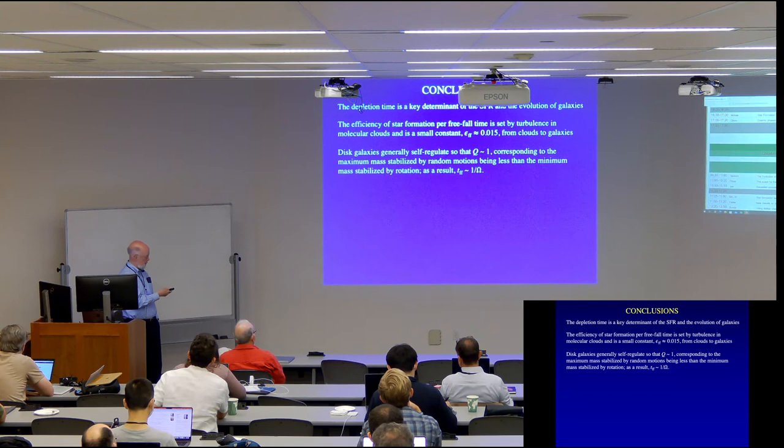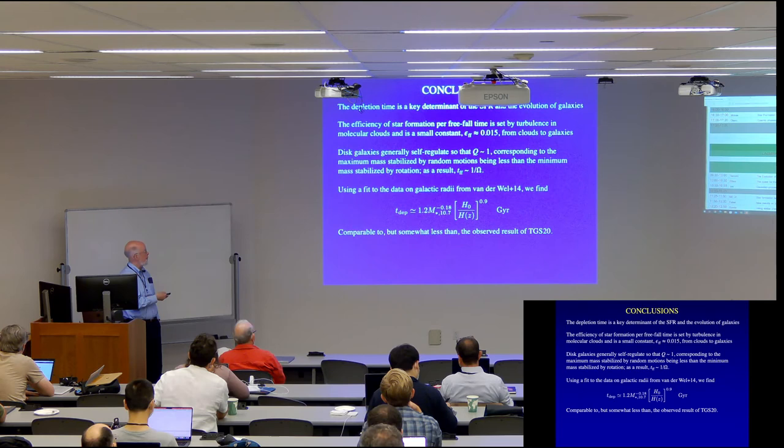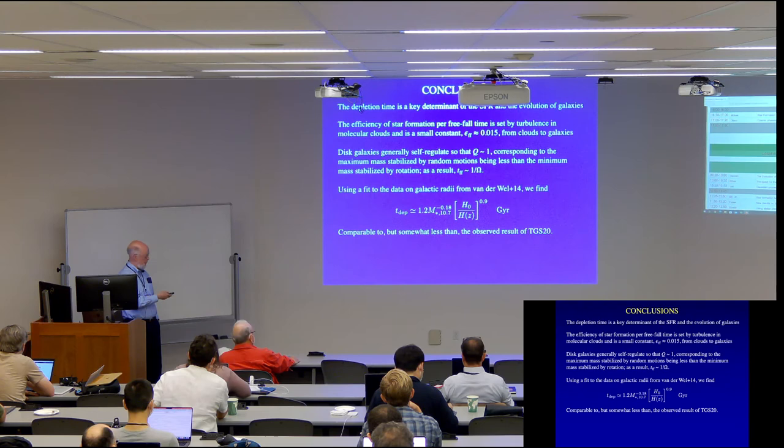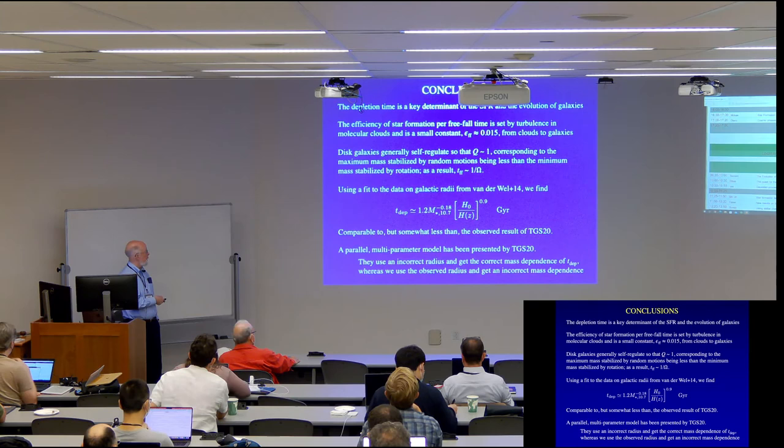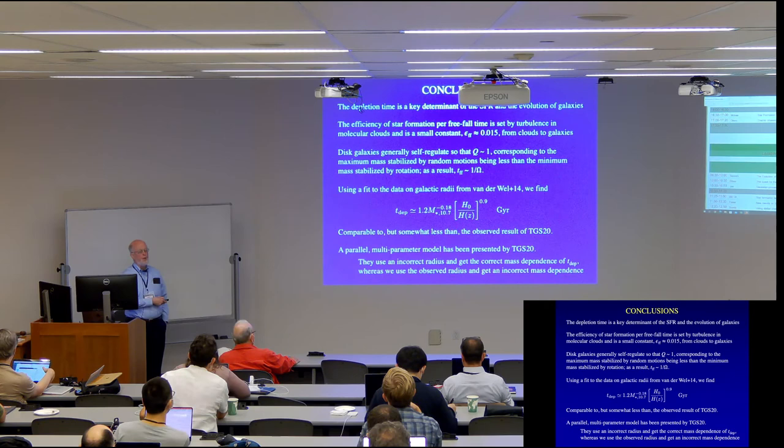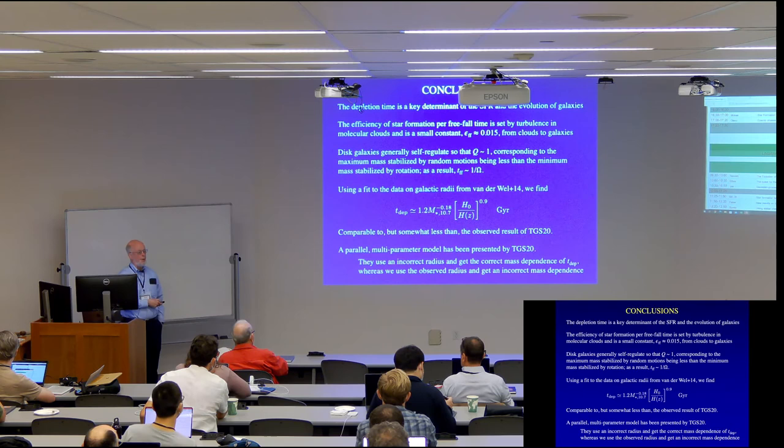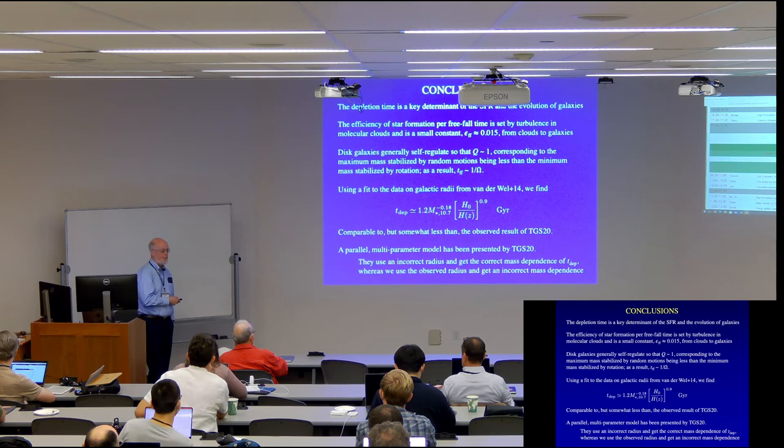So as a result, you have this local quantity, the free-fall time, being related to a global quantity, the rotation rate of the galaxy. Using a fit to the data on galactic radii from a Vanderbilt paper in 14, we found this result for the depletion time. And it's comparable to, but somewhat less than the observed value from the review by Tacconi et al. And then they presented a parallel multi-parameter model. And as I mentioned in this conundrum at the end, they use an incorrect radius and get the correct mass dependence of the depletion time, whereas we use the observed mass dependence of the radius and get an incorrect mass dependence for the depletion time. And that is a problem that I'll have to solve something in the future. So thank you.